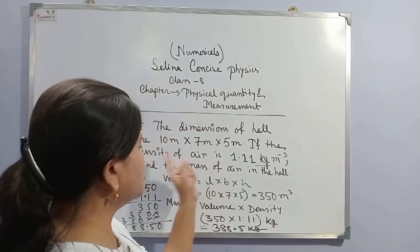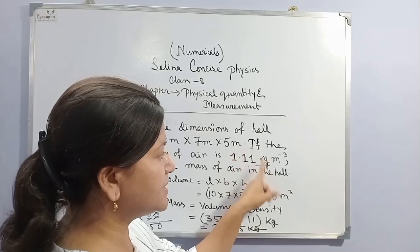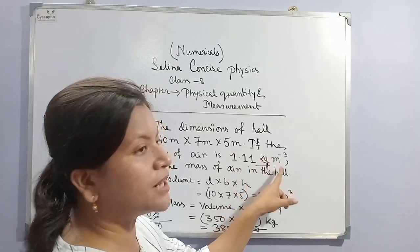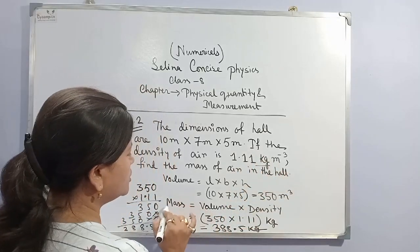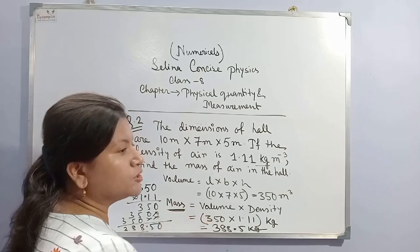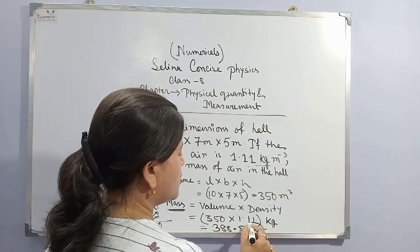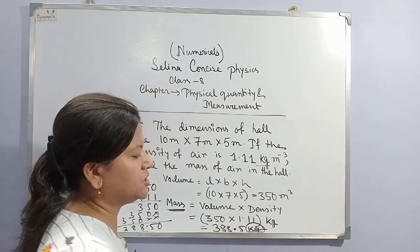Here the unit of density is in SI unit, that is kg per cubic metre. That is why the unit of mass will also be in SI unit, so the unit of mass will be kg.